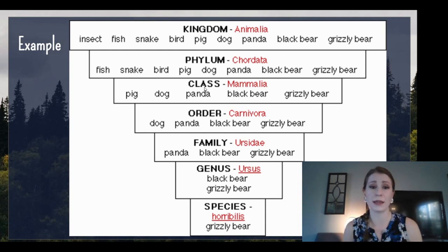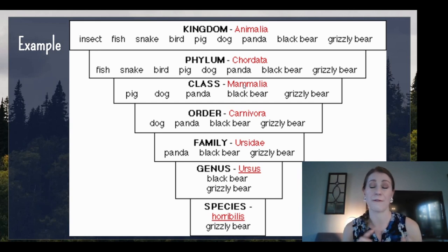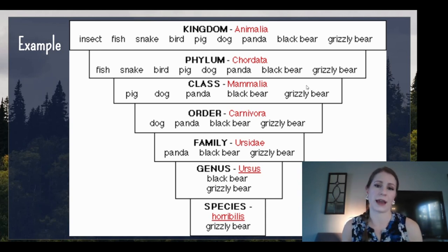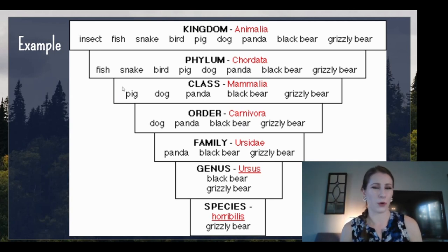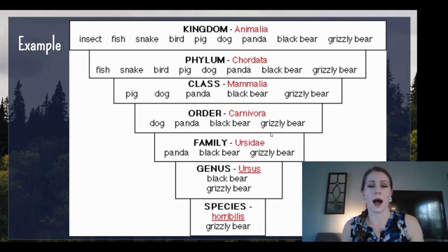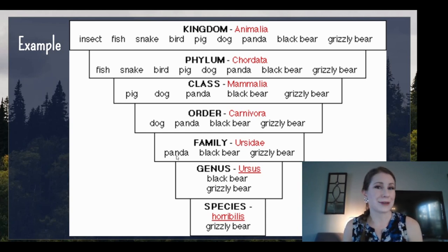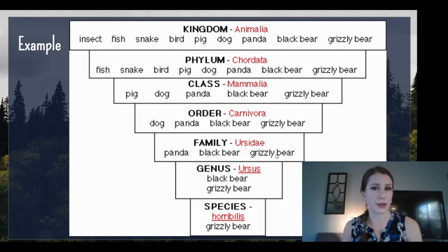After that, we go down to the class Mammalia — this includes all mammals. Some characteristics include they have hair, live young, and they nurse their young. All of these animals fall into that category. Then order Carnivora — these are mammals that eat meat. A pig does not typically eat meat; pigs are usually herbivores. But dogs, pandas, black bears, and grizzly bears all eat meat naturally. Then family Ursidae — the bear family. Pandas are technically in the bear family, and we have the black bear and grizzly bear there as well.